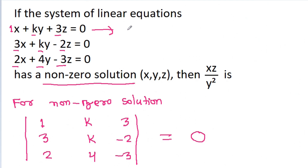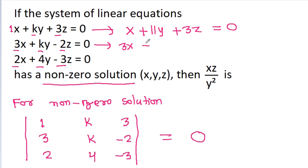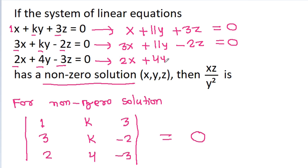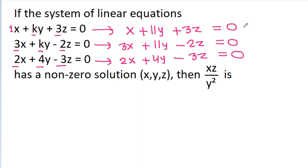So substituting k equals 11, the equations become: equation 1: x plus 11y plus 3z equals 0; equation 2: 3x plus 11y minus 2z equals 0; and equation 3: 2x plus 4y minus 3z equals 0.